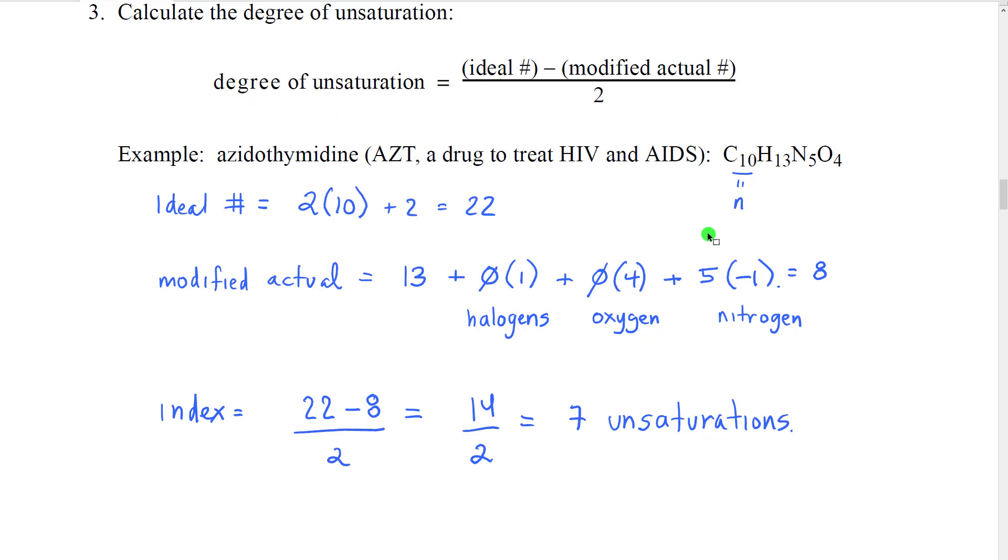Here's an example. Azidothymidine, abbreviated AZT, is a drug that's used to treat HIV and AIDS. It has this formula. How many unsaturations are there in this molecule?